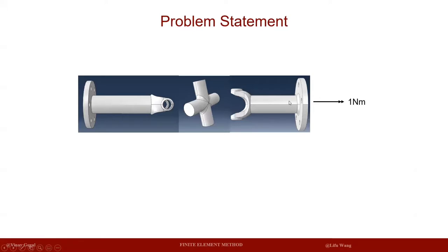Let's see the problem statement. We have a joint structure — the left-hand side and right-hand side — and the two shafts are going to be joined by a cross element. We are going to fix or pin the left-hand side hole using the bolt, but we are going to use a direct boundary condition to simulate the bolt. On the right-hand side, we're going to apply a torque of 1 newton-meter.